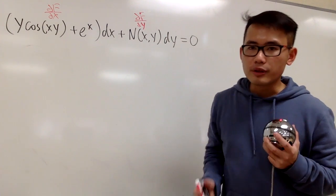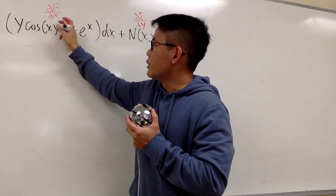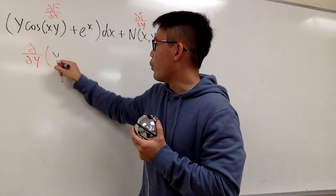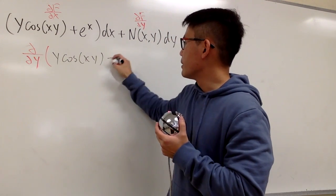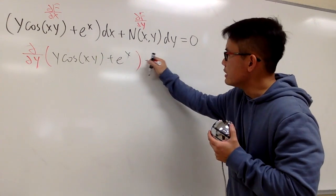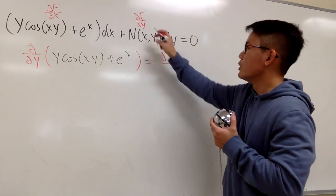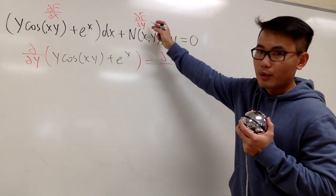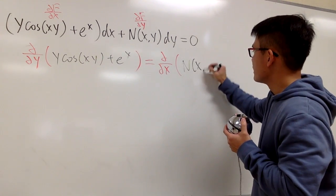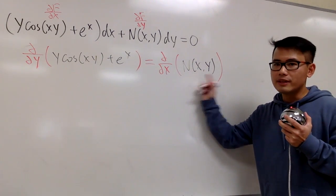And we have to ensure the mixed partials are the same. So right here, this was the partial with respect to x already. I would like to take the partial with respect to y and put this down: y times cosine of xy, and then plus e to the x. And we have to make sure this is equal to the partial of N(x, y) — with respect to y already — so we do it with x now. N(x, y) is a function in terms of both x and y.